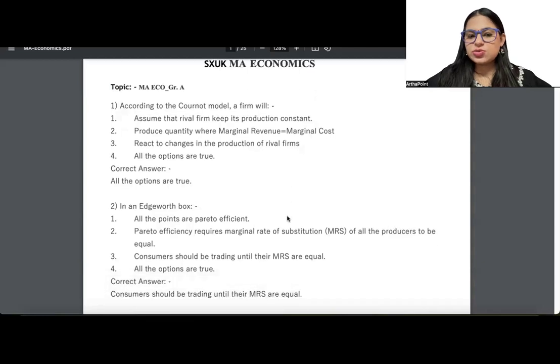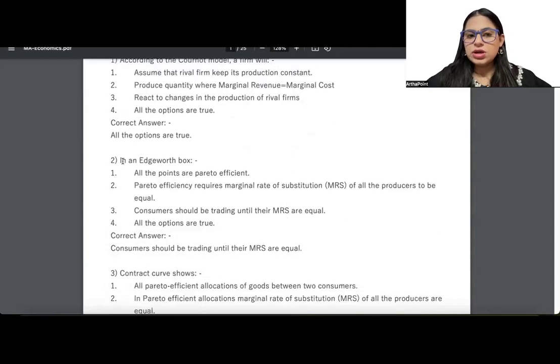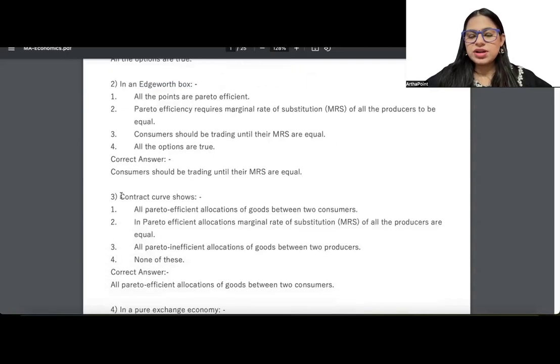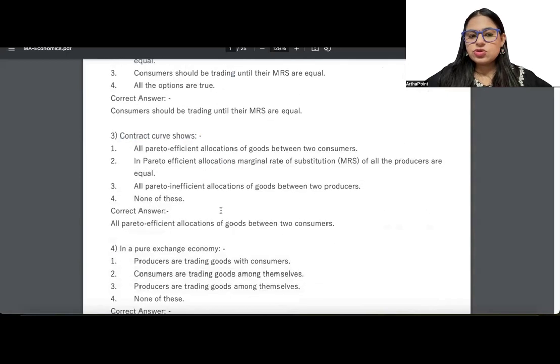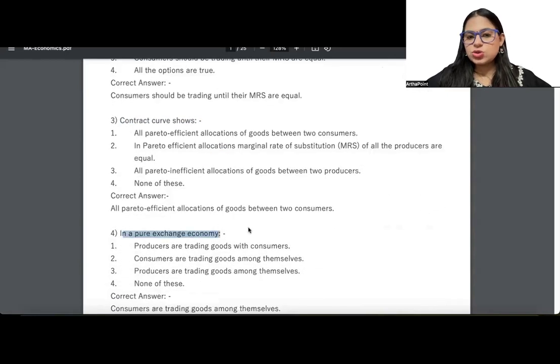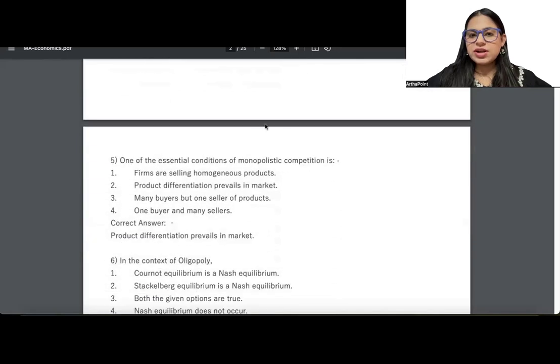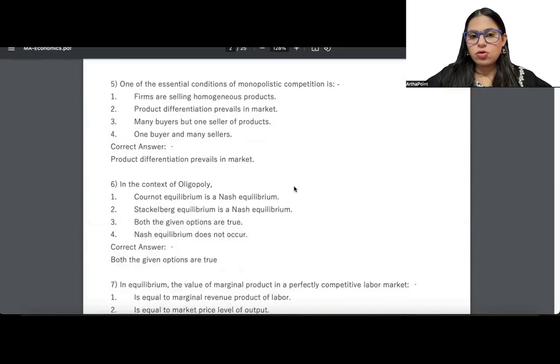The second question is related to Edgeworth box and general equilibrium. The third and fourth questions are also related to Edgeworth box contract curve. The fifth question is related to forms of market - monopolistic competition. The sixth is forms of market - oligopoly. So you can see that the kind of questions asked in this exam are not very difficult.